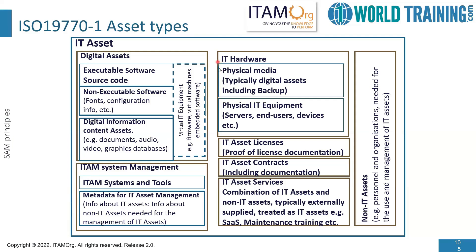IT hardware is at the top right, which can include physical media such as backup and other digital media, as well as physical IT equipment — servers, end user devices, etc. Then we have IT assets which are the actual licenses, proof of license documentation. Then we have contracts — also another type of IT asset. Then we have services, also an IT asset. For example, if an organization goes to a cloud vendor for software services, then those software services become an IT asset. Maintenance and training can also become IT assets. There are some non-IT assets as well, for example, personnel and organization needed for the use and management of IT assets.